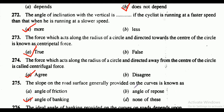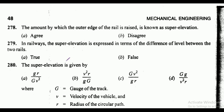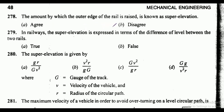Question 276: the ideal angle of banking provided on curves on roads depends upon — the correct answer is option B, that is velocity square of the vehicle. Question 277: when a train is rounding a curve, the side thrust on the wheel flanges is prevented by raising the outer edge of the rail — yes or no? It is yes, true.